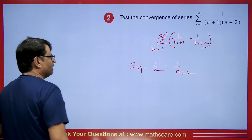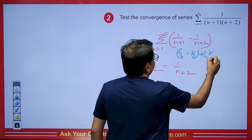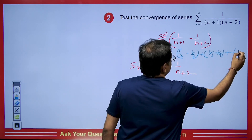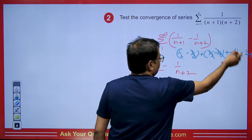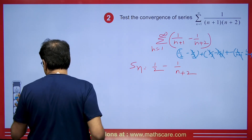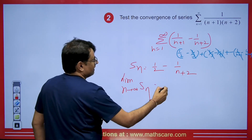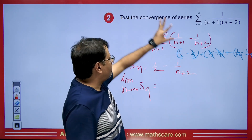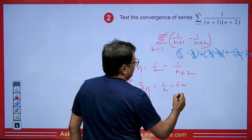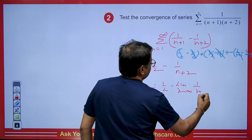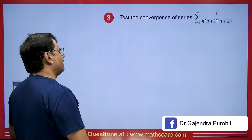So the full cancellation pattern gives Sₙ = 1/2 − 1/(n+2). Now since we want the sum, the limit as n→∞ of Sₙ equals 1/2, since 1/(n+2) → 0. So the value of the series is 1/2.